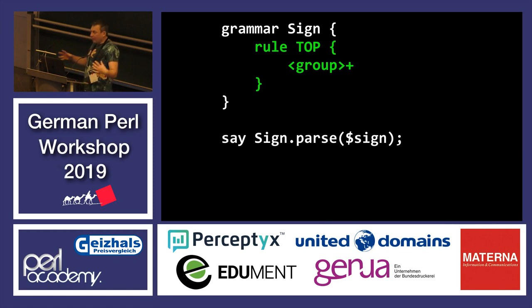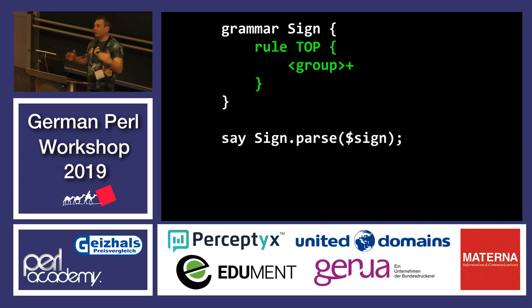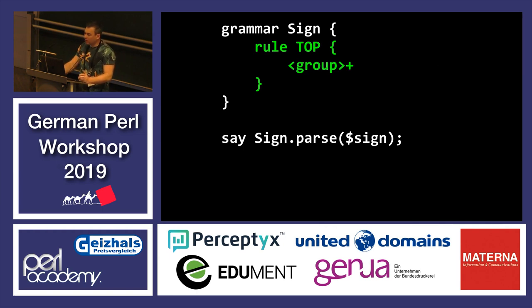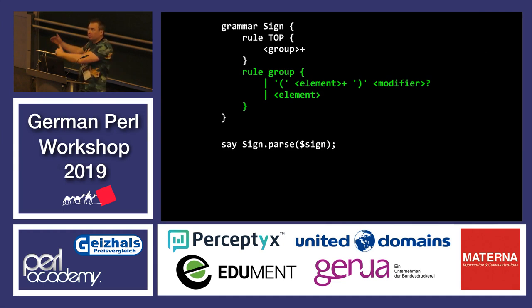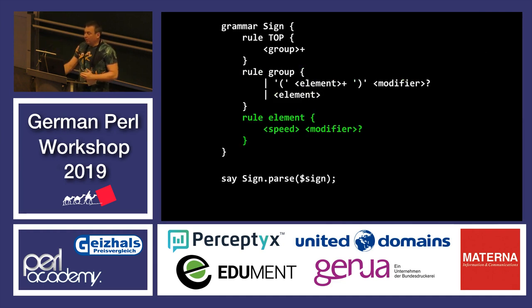Every grammar starts with the top rule. In my example it's just a list of some groups. PLUS is a regular expression quantifier, just the same as in Perl 5. Then I explain what a group is: a group is either a single element or a grouped element with parentheses and some modifier at the end. The element is the speed sign followed by some possible modifier.